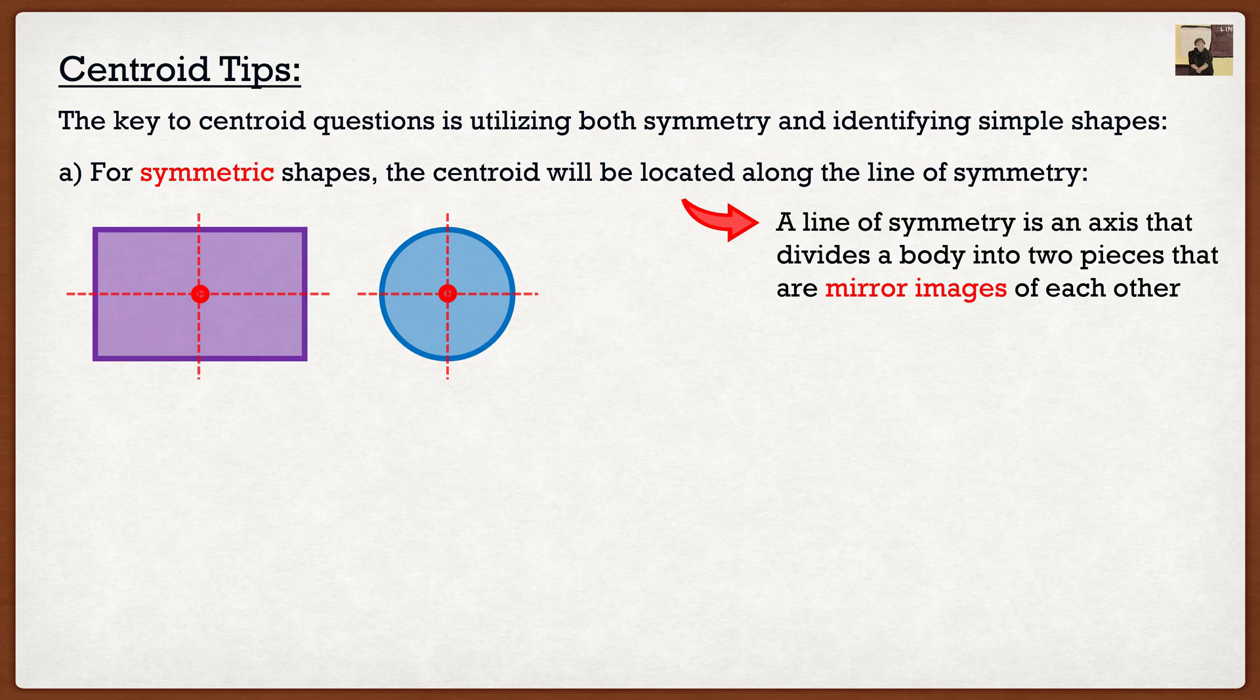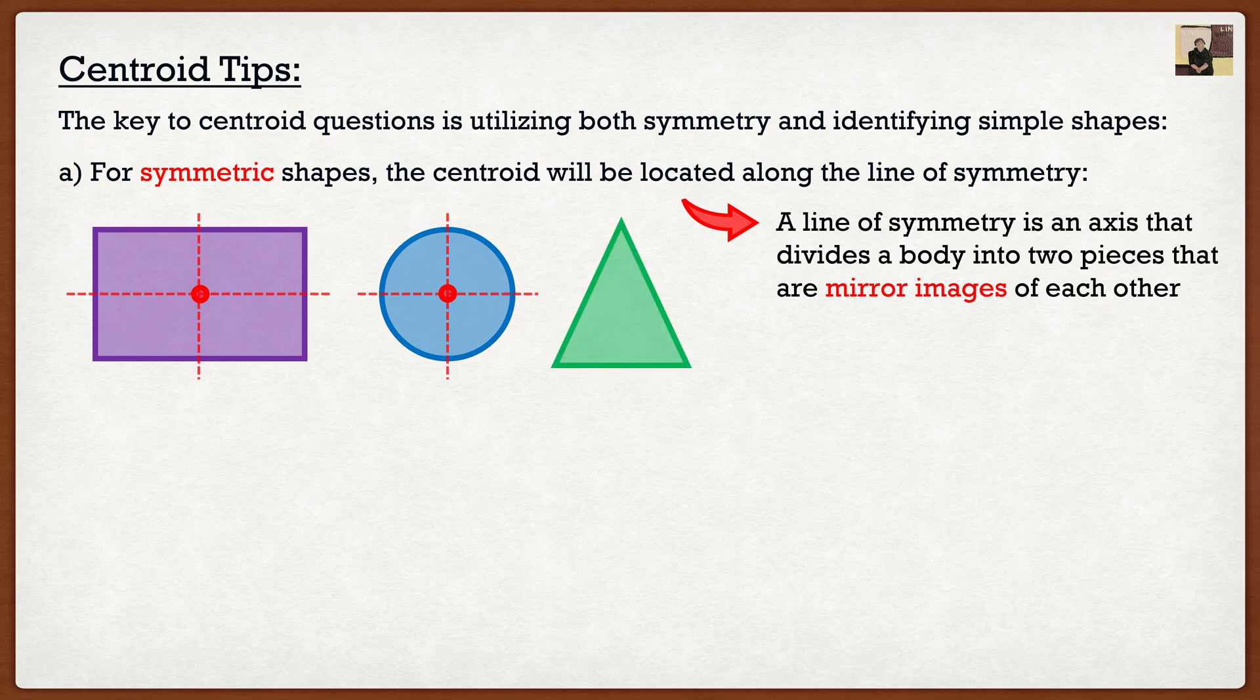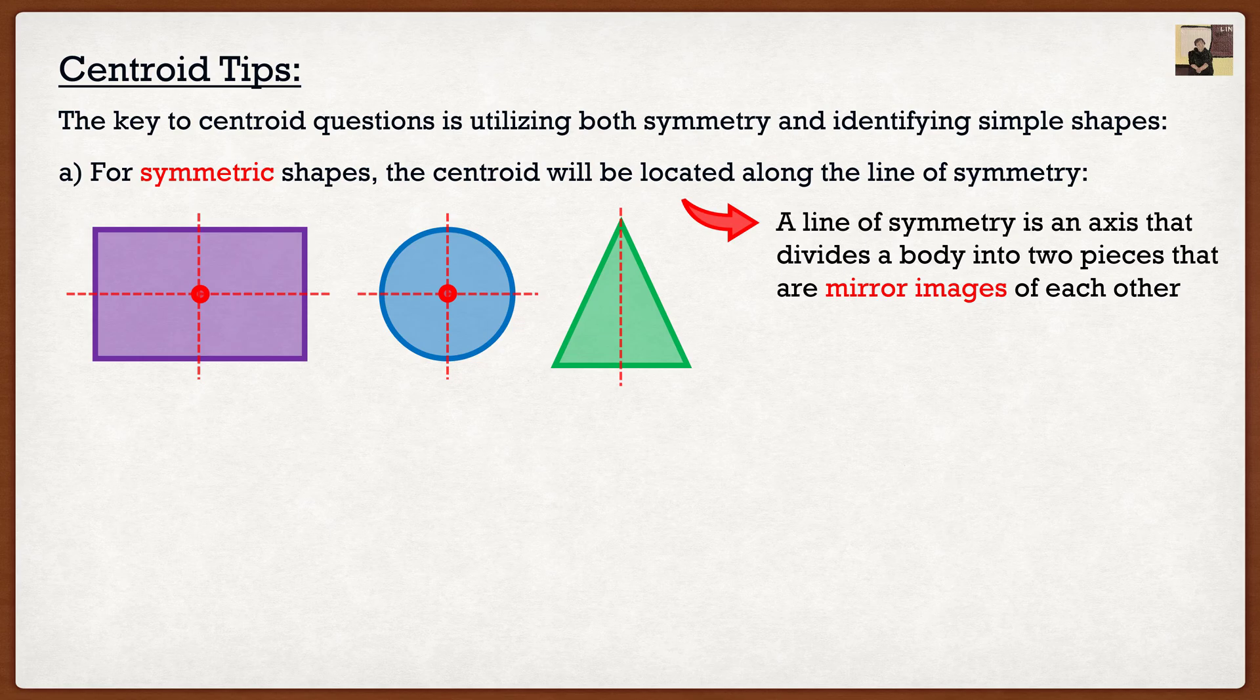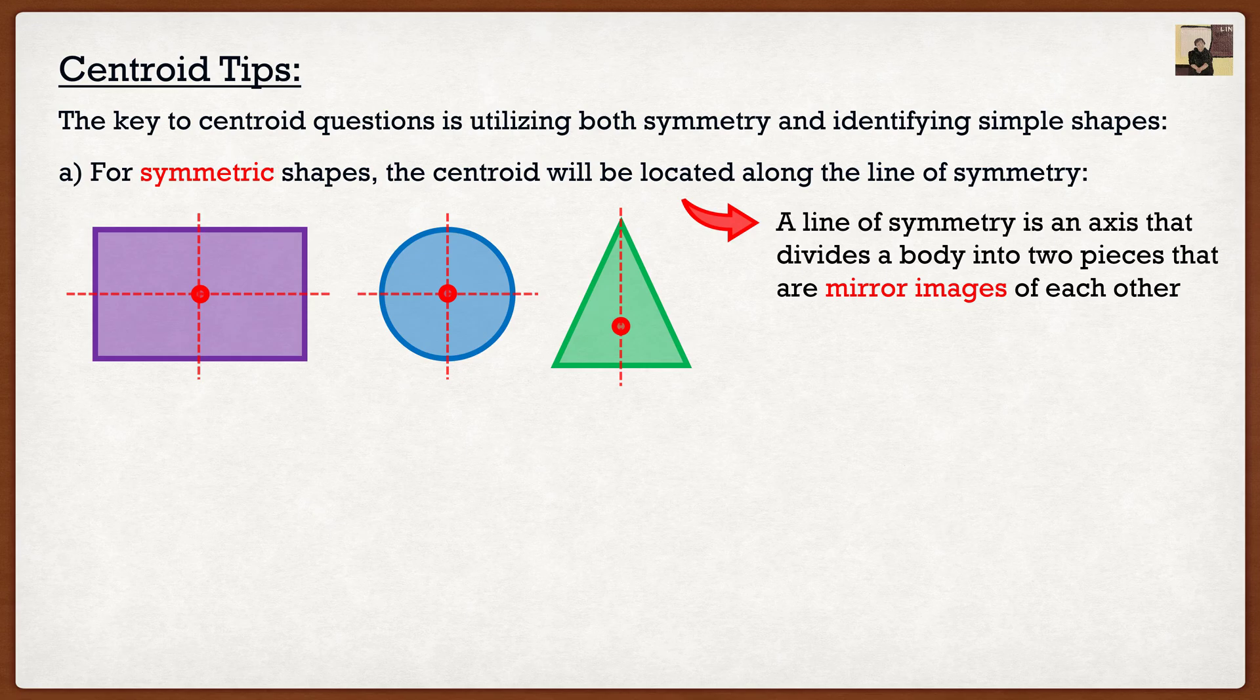Now, sometimes you won't always have a doubly symmetric shape where we have both x and y as symmetric, but you might have something that is symmetric along one axis. So if we were to look at a triangle here, we know that there is a mirror image if I were to draw a vertical line. So we know that our centroid or x bar is going to be somewhere along that vertical line. Y bar, we would actually have to do some math because we don't know where exactly vertically it would be. But for x bar, we know it's just going to be kind of the midpoint of that shape. So hopefully that helps.